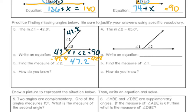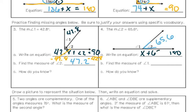Looking at number four, it tells us that the measure of angle two is 65.6 degrees. These angles together make a straight line, which I know is supplementary, and the sum is going to be 180. So I need to take angle one and add that to 65.6 to equal 180. Solving this by subtracting 65.6 on both sides, I get that angle one is 114.4 degrees. I know this because they are supplementary angles and they add up to a sum of 180 degrees.